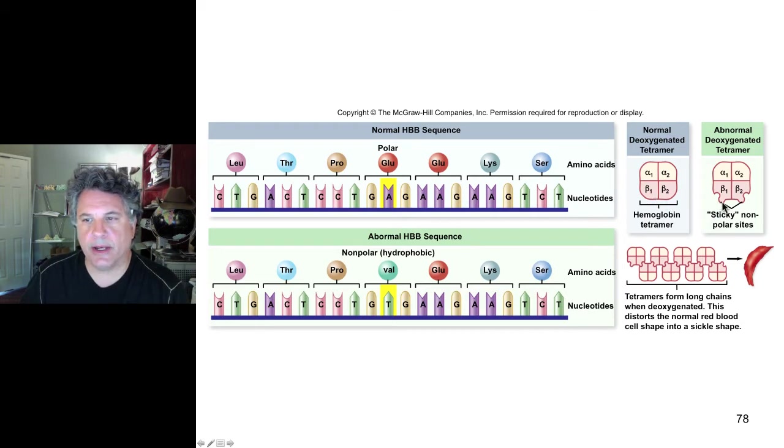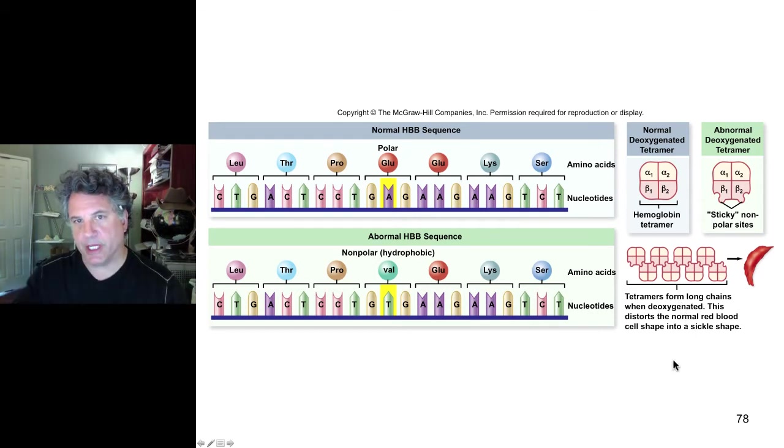Those valine nonpolar sites, the sticky nonpolar sites, hide away from water by embedding themselves in other beta globin molecules in various tetramers. This results not in the individual hemoglobin tetramers floating around in red blood cells, but in low oxygen situations where you have a deoxygenated tetramer not carrying oxygen, that yields the association of tetramers by the association of hydrophobic valines on the surface. That results in long chains of hemoglobin molecules, which in a way form cables of hemoglobin tetramers that are associated with each other.